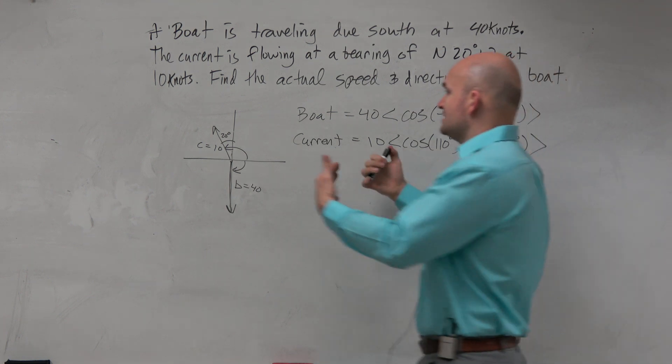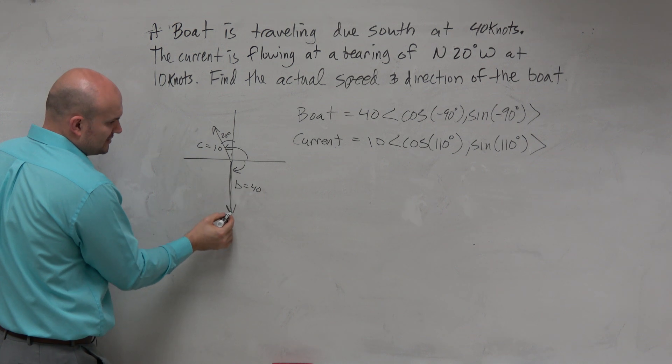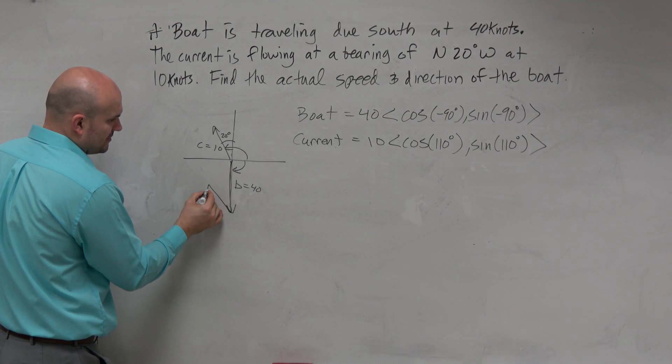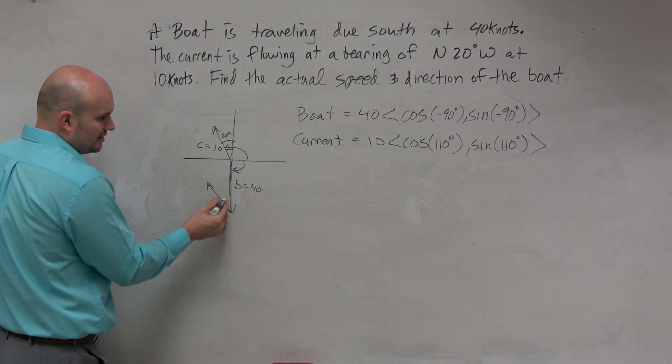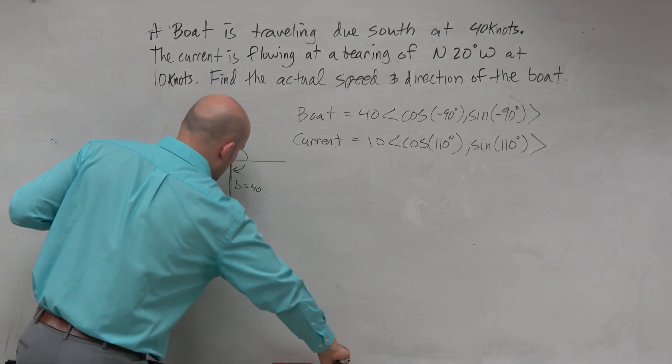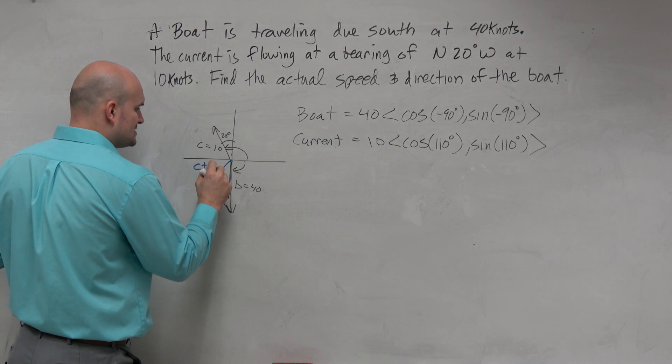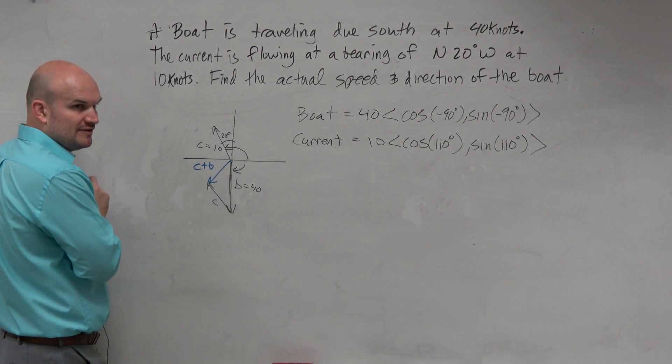Like, when they're asking, what is the actual speed of the boat, this is where last class period comes into play. Remember that tail-to-head method that we were talking about? That's basically what we're looking for. Just add the current to the boat. And what that gives us is what we're looking for. This is going to be your current plus the boat. That's what we want to figure out.